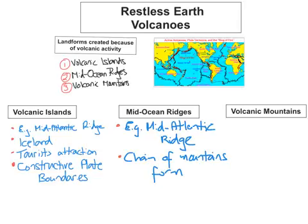The last landform is volcanic mountains. These happen at constructive plate boundaries when the plates are separating. Magma moves up through the vents and comes out the crater. When the magma reaches the surface it cools quickly. Over time the volcano will erupt over and over again and the lava flow will build up, forming a cone shape. When the lava cools it forms rock, and over time it forms a volcanic mountain. A good example is Mount St. Helens, which is along the Pacific Ring of Fire.